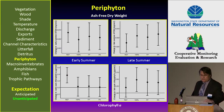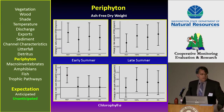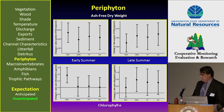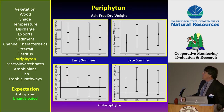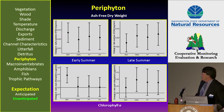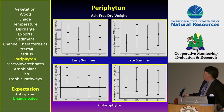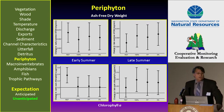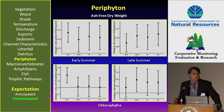Periphyton was our pseudo-measure of production — not exactly primary production, but somewhat close to it. There were two measures incorporated: ash free dry weight on top and chlorophyll A on the bottom two panels. The left-hand panels are the response from early summer and the right-hand panel is the response in late summer. The significant result across periphyton is that there were no significant differences across the treatments and references for the treatment-by-period interaction term, which is the important term we were looking at in this study.